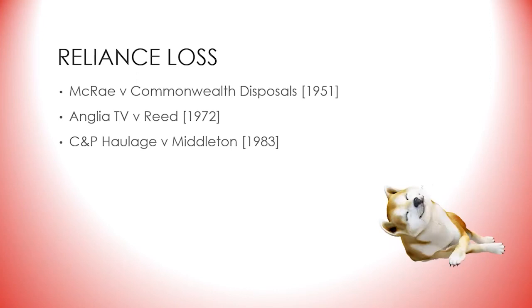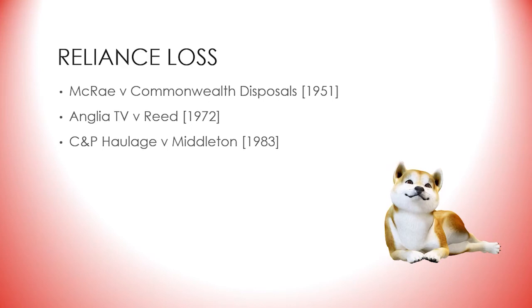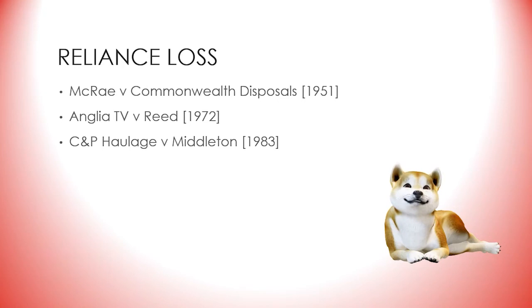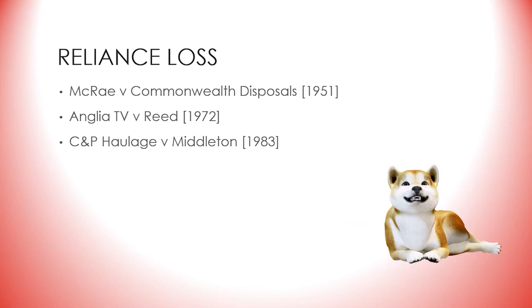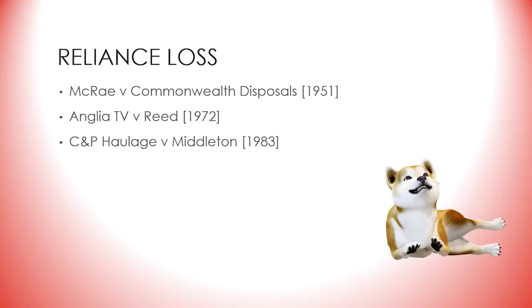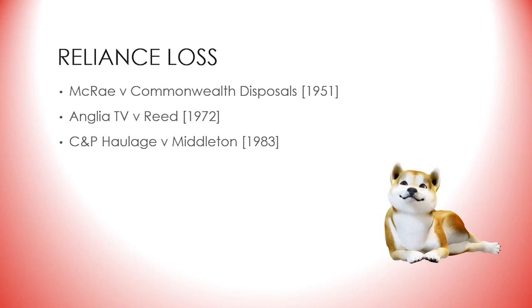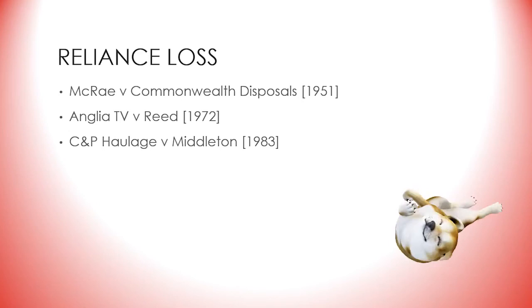Furthermore, the courts do not offer compensation for the consequences of bad bargains. As in CCC Films (London) v Impact Quadrant Films from 1983, if someone would have lost money out of a deal anyway, they are not entitled to claim the expenses incurred as a result of making the contract — because this would compensate them at the respondent's expense for the bad bargain they made and would leave them better off than they would have been had the contract been wholly performed. In principle, the claimant is free to quantify his loss on an expectation or reliance basis and has to prove the loss he is claiming; however, if the respondent claims it is a bad bargain, the burden of proof shifts to the defendant.